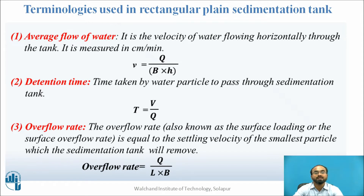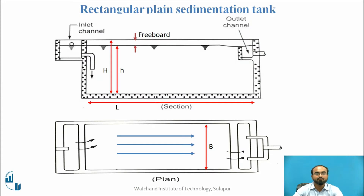The third parameter is overflow rate. Overflow rate is the settling velocity of the smallest particle present in the sedimentation tank that must be removed. It is also called surface loading rate or SOR. The formula is capital Q divided by L into B, where Q is discharge, L is length, and B is breadth. Note that the area used here is the surface area (length × breadth), not the cross-sectional area, since the particle settles in the vertical direction.